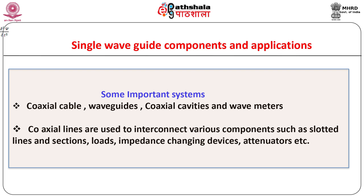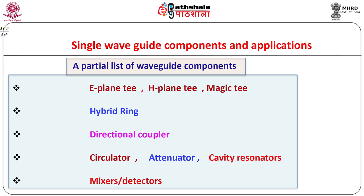We are familiar with the terms coaxial cable and waveguides. Coaxial lines are used to interconnect various components such as slotted lines and sections, loads, impedance changing devices, attenuators, etc. Coaxial cavities and wavemeters can be found described in literature with adequate details to account for the theoretical, instrumental and technical aspects. Similarly we can have different types of waveguide components.